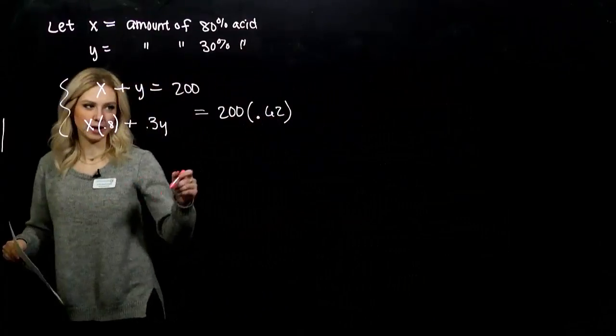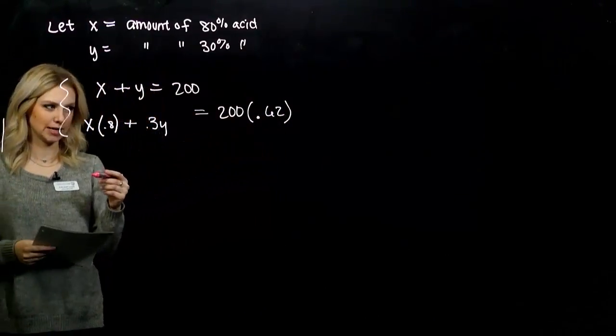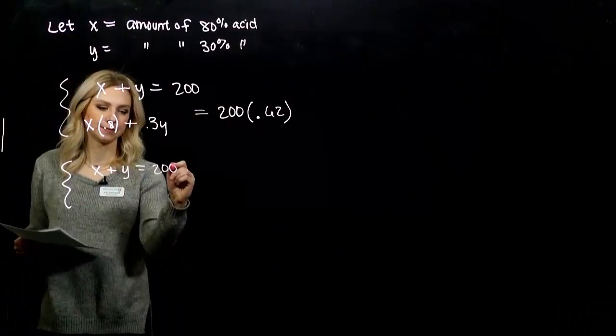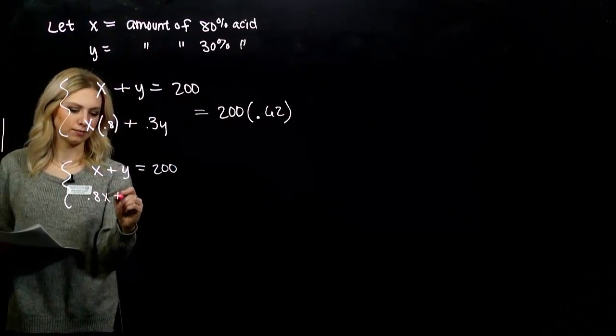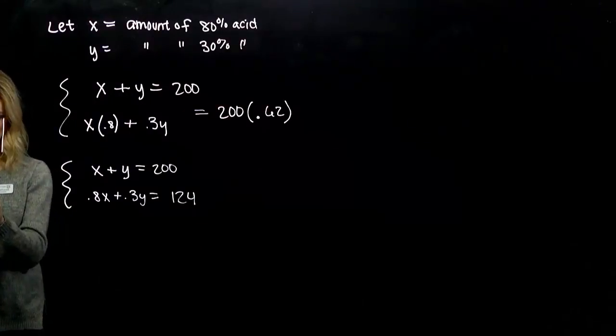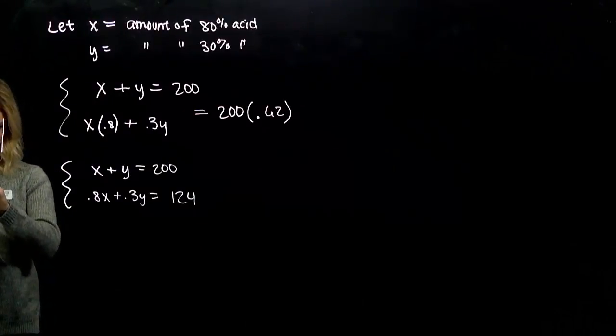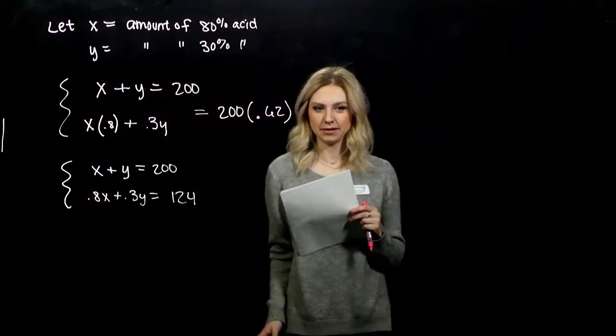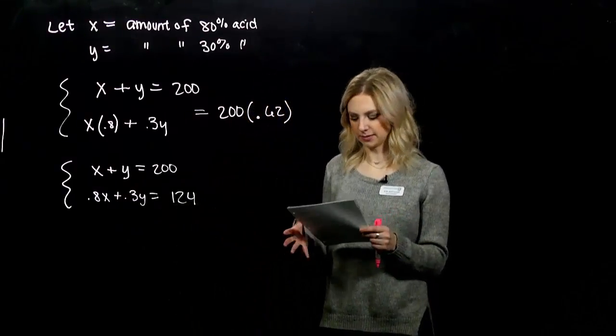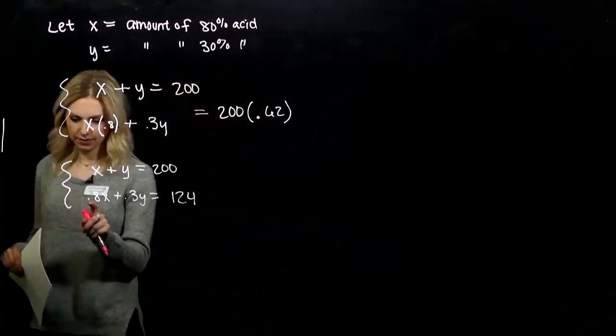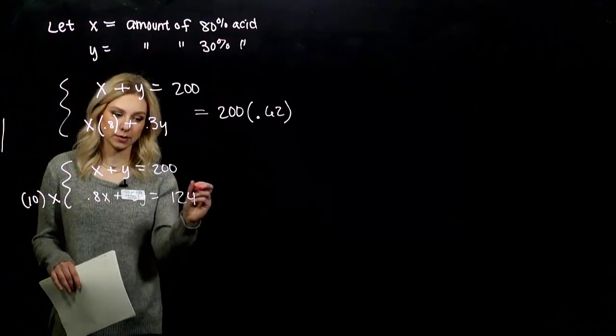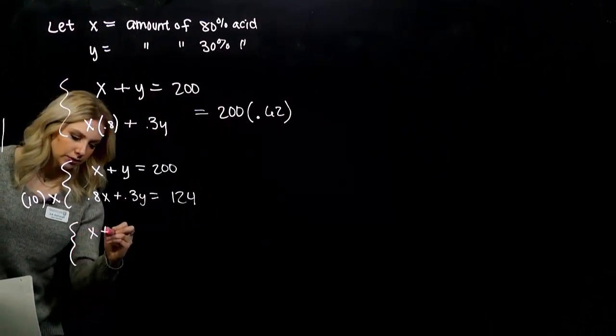Simplifying this, 62% of 200 is 124. So the system is x plus y equals 200, and 0.8x plus 0.3y equals 124. I don't like decimals if I can help it. How can I alter this system to get rid of those decimals? Multiply everything by a factor of 10.